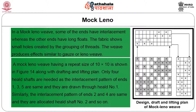In a mocklino weave, some of the ends have interlacements whereas the other ends have long floats. The fabric shows small holes created by the grouping of threads, producing effects similar to gauze or leno. A mocklino weave having a repeat size of 10 by 10 is shown in figure 14 along with drafting and lifting plan. Only 4 heel shafts are needed, as the interlacement pattern of ends 1, 3, and 5 are the same and drawn through heel shaft number 1, the pattern of ends 2 and 4 are the same and allocated heel shaft number 2, and so on.